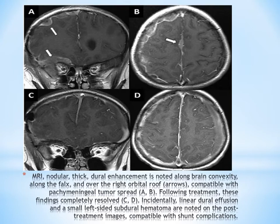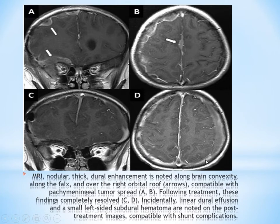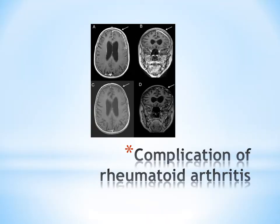This is a case of CNS intracranial tumor showing thick nodular enhancement. After shunting, there is pachymeningeal enhancement not seen in the last image, but there is subdural hematoma following shunting. In one case there is leptomeningeal enhancement, and following shunting and treatment there is pachymeningeal enhancement with subdural hematoma. Both leptomeningeal and pachymeningeal enhancement can be present simultaneously. Complications of rheumatoid arthritis can also cause pachymeningeal enhancement.